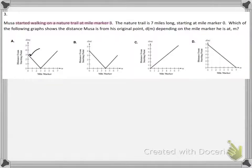It says right over here, the distance from the starting point. That's where Musa is starting. And it says he started walking at mile marker 3. So, mile marker 3, he would be 3 miles away from mile marker 0. And that is the only graph that shows him starting at mile marker 3.